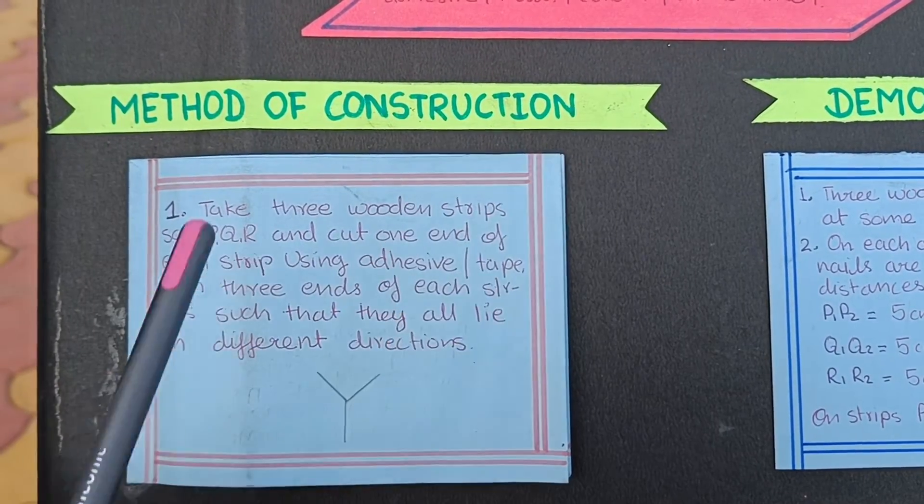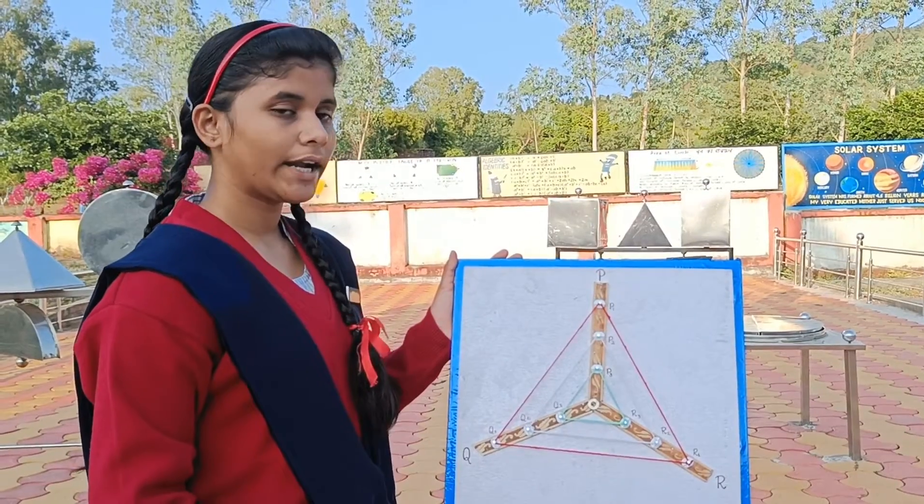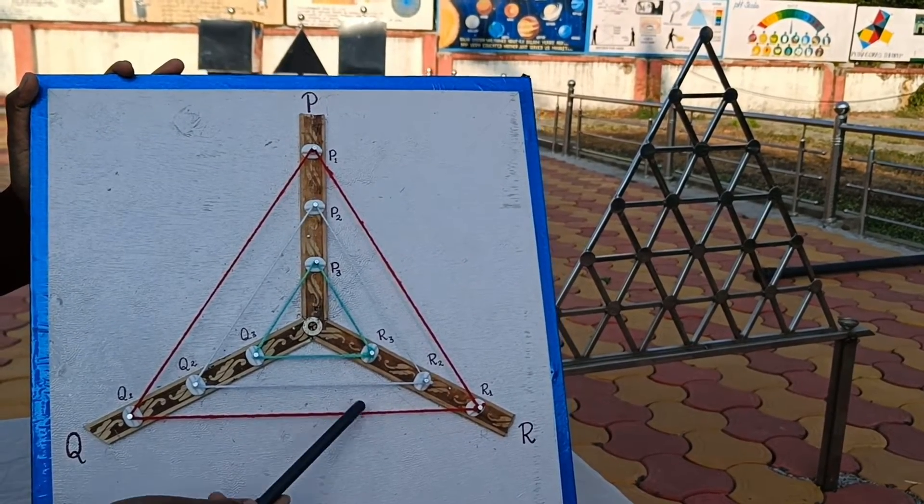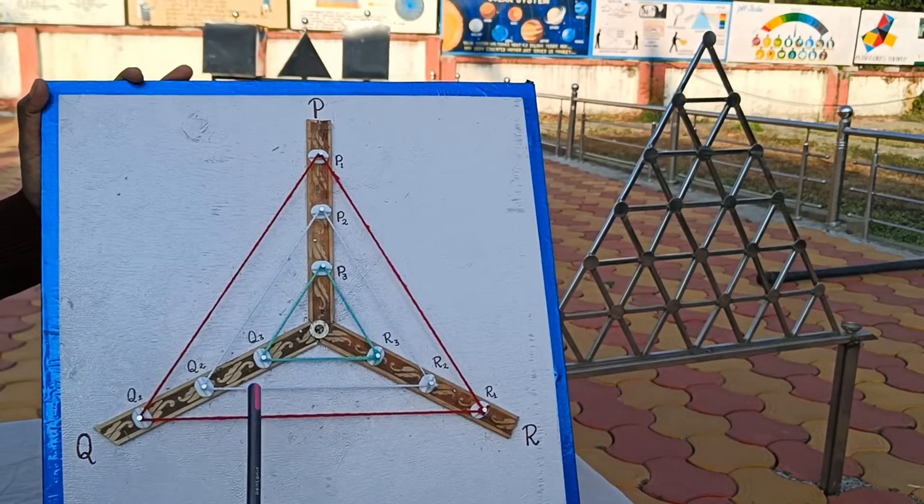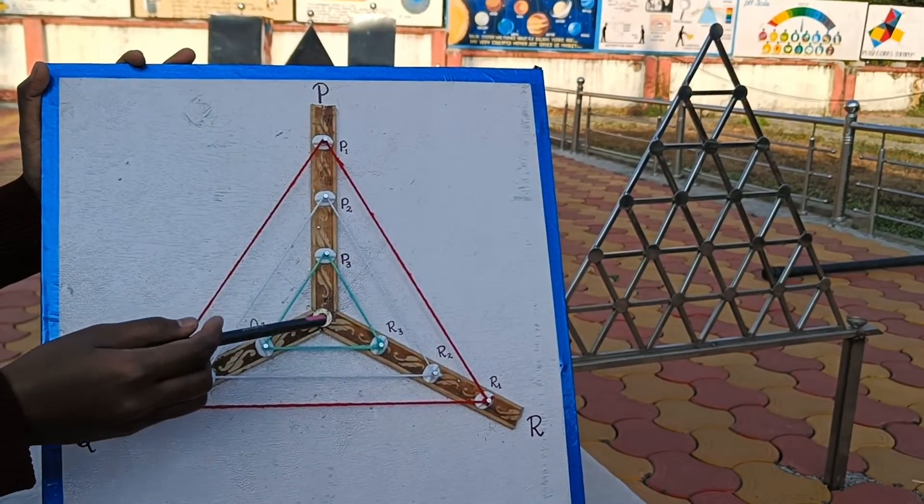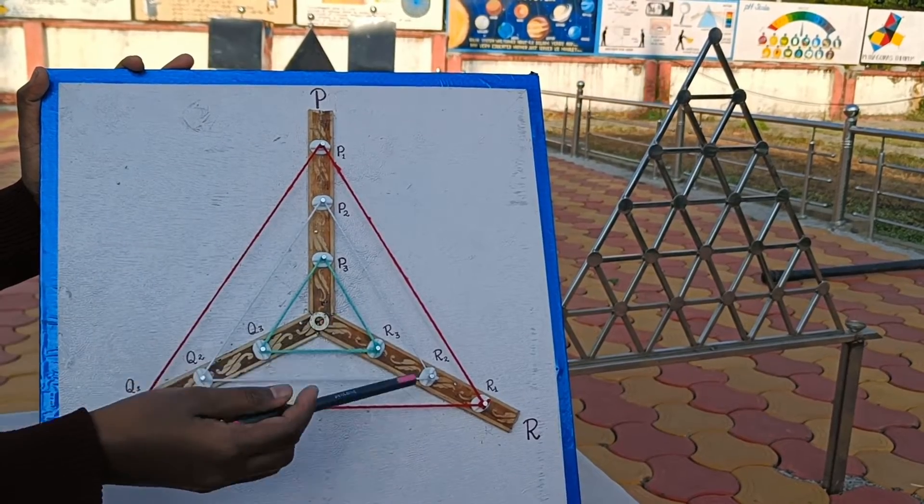Methods of construction of this activity: To get more triangles, take three wooden strips, say PQR, and cut one end of each strip. Using adhesive tape, join three ends of each strip such that they all lie in different directions.